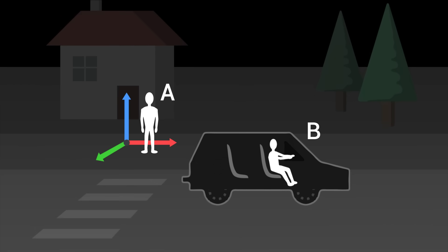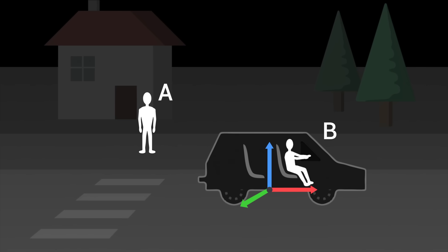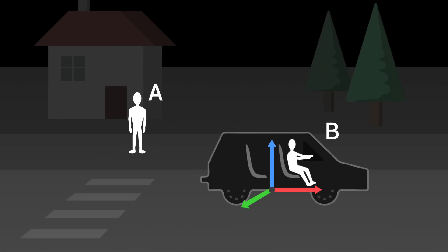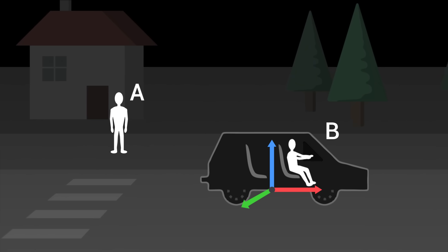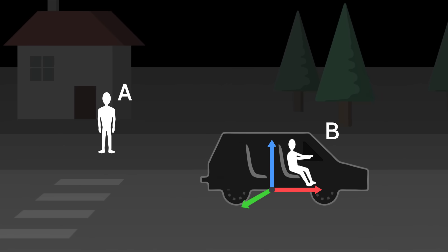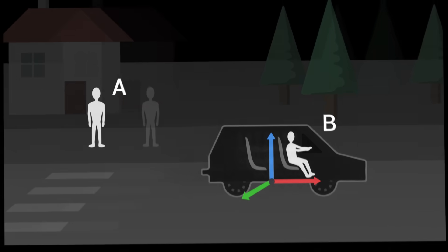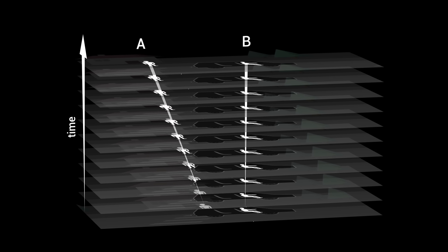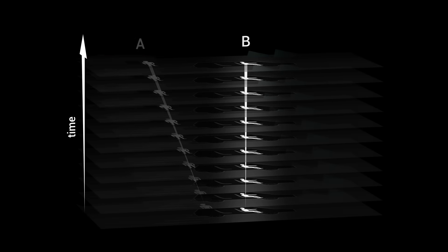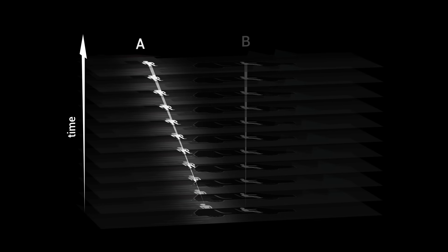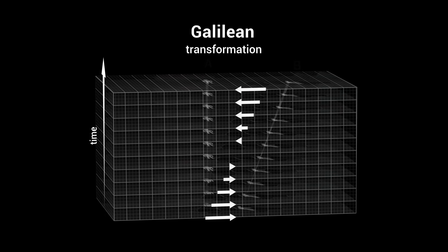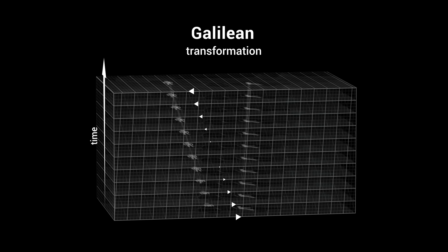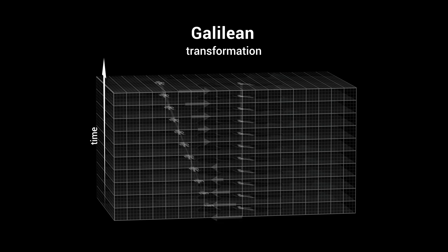What would the diagram look like if we asked the driver to draw it from his point of view? In his reference frame, B is at the centre of the universe. To form his diagram, we must shift all slices one after the other to replace him at the centre of the scene. The car is now motionless, and it is person A who seems to be moving backwards. We have just performed a Galilean transformation. Shifting the slices of space allows us to change our frame of reference.